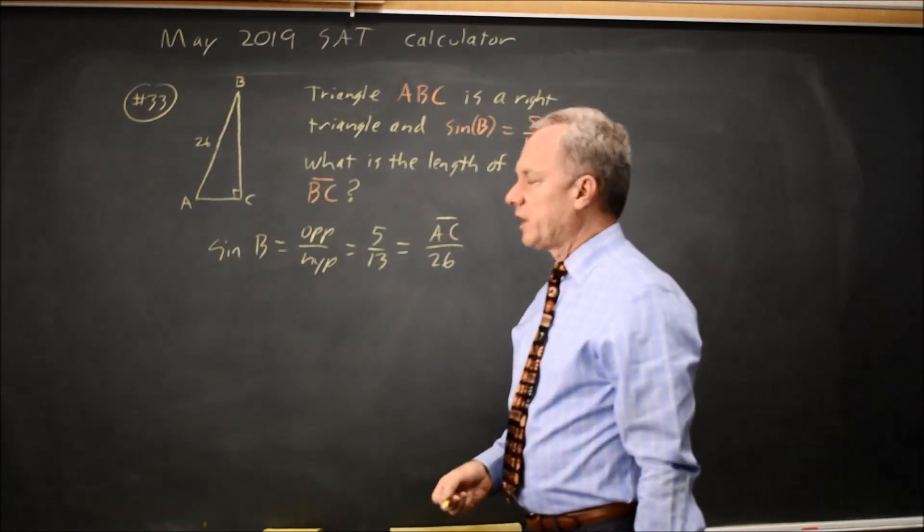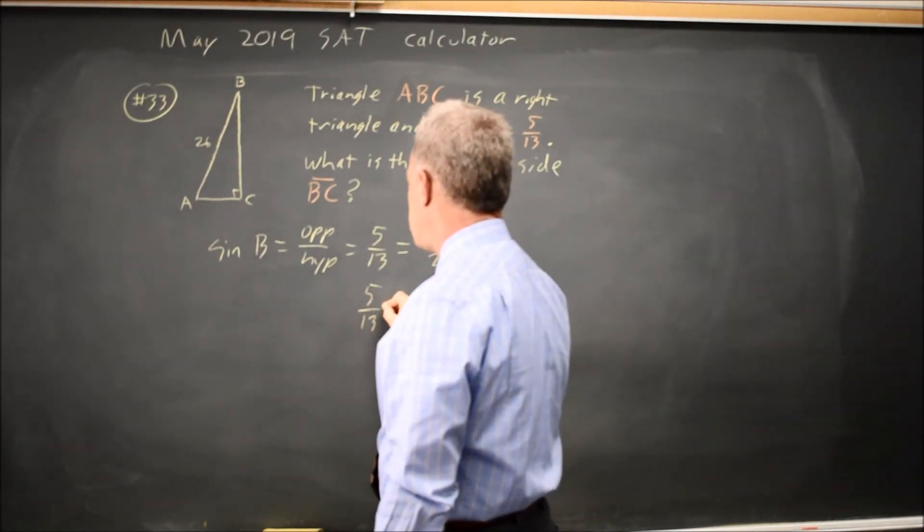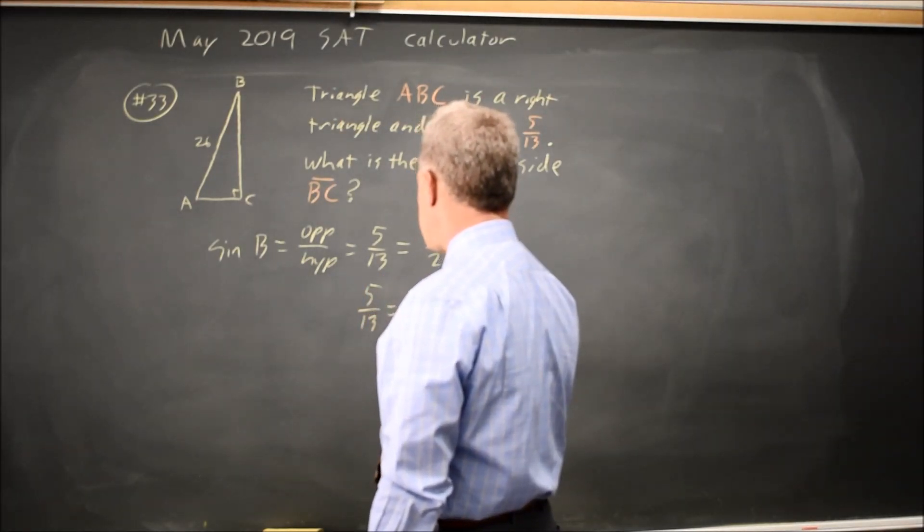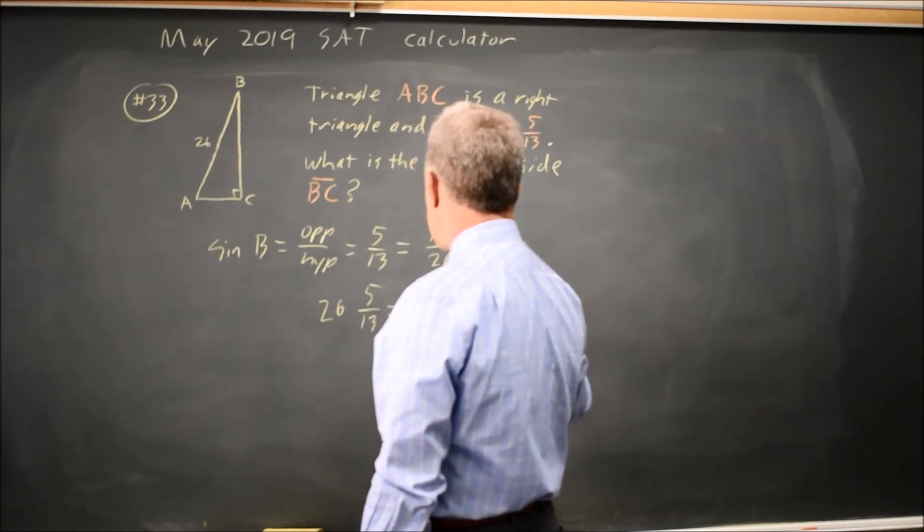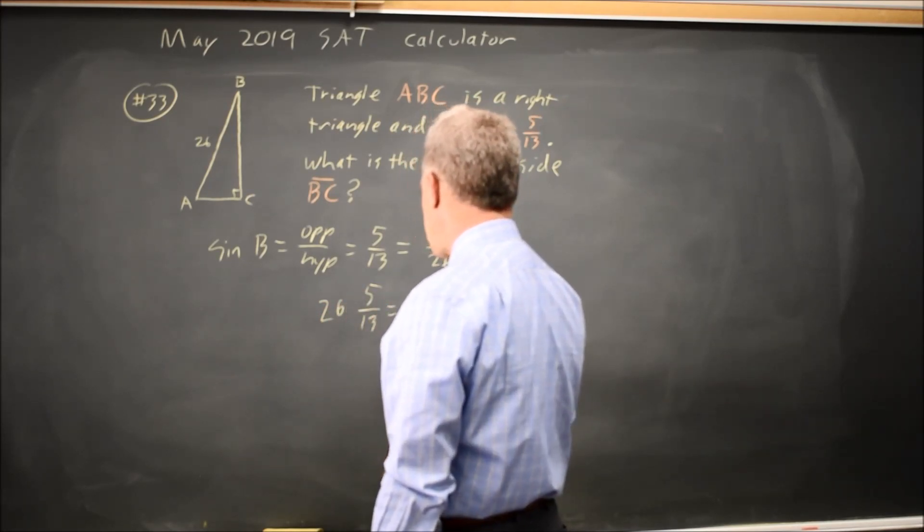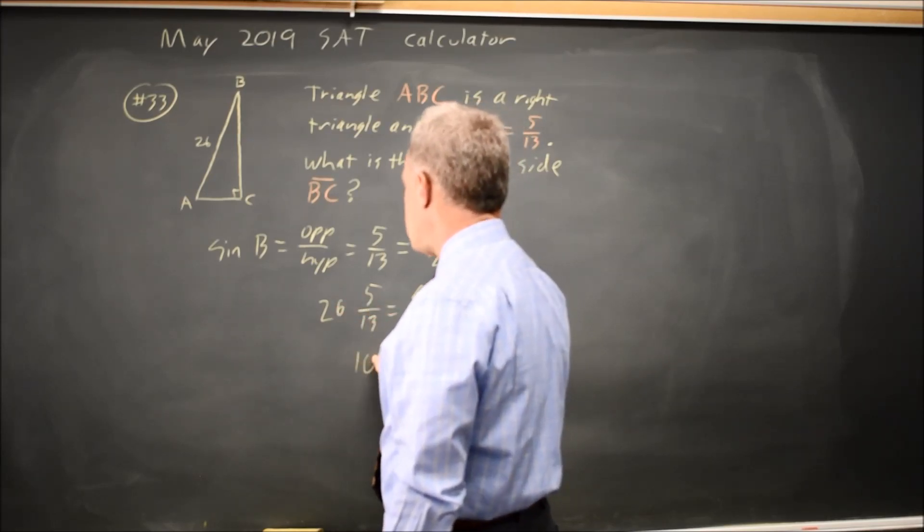This allows us to solve for AC, because if I take 5 over 13 equals AC over 26, and multiply both sides by 26, 26 over 26 is 1. So I get AC, 26 over 13 is 2, times 5 is 10.